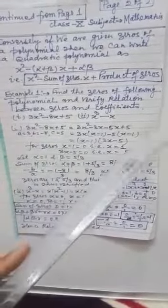For zeros you have to factorize it. It is a quadratic polynomial, so its factors after factorization are (x - 1) into (3x - 5). For zeros, x - 1 = 0, that is x = 1, and the other zero is x = 5/3.